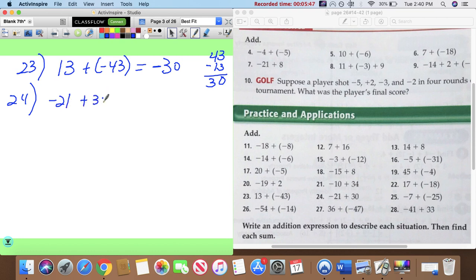Twenty four: negative twenty one plus thirty. So, there's more positives. Ganan los positivos. ¿Cuántos más positivos hay? Treinta. Restamos. Treinta menos veintiuno es nueve. Nueve positivo.